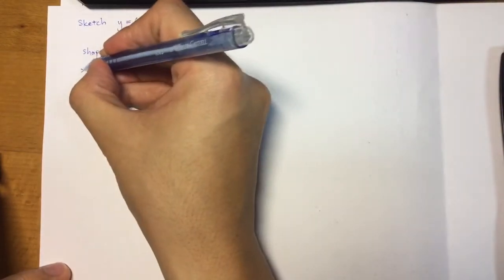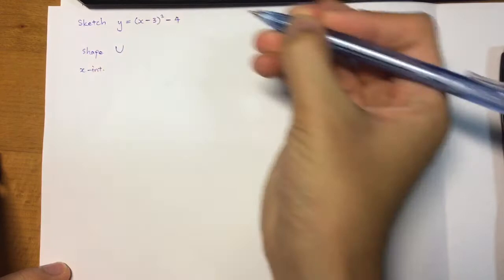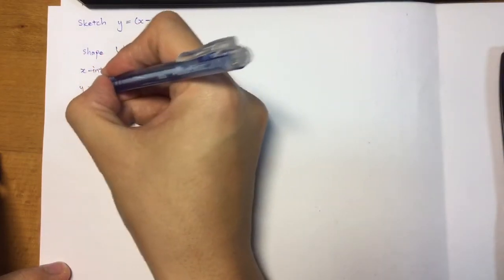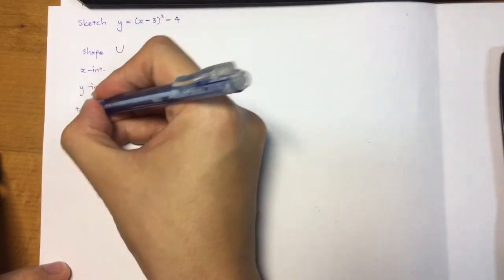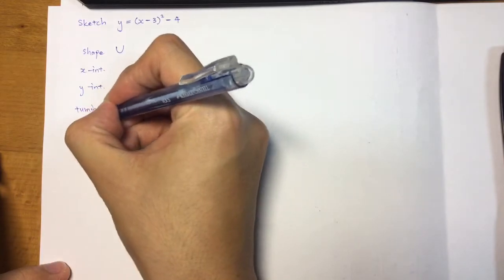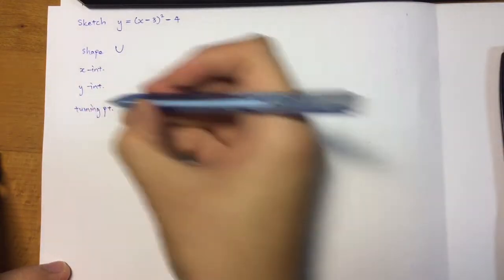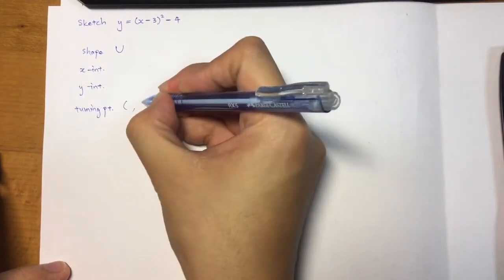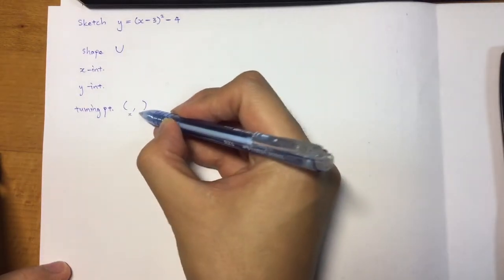The second thing you want to know is the x-intercepts, y-intercepts, and the turning point. Bear in mind that the turning point later on has to be a coordinate of x and y.